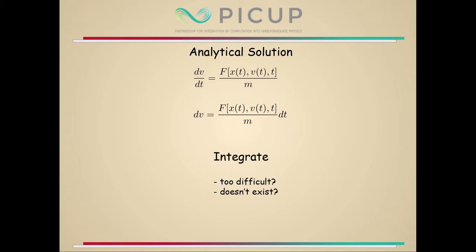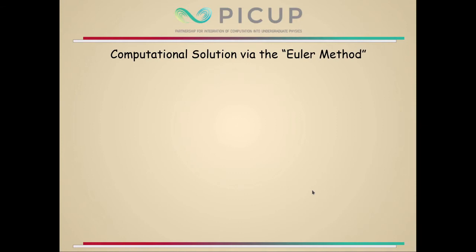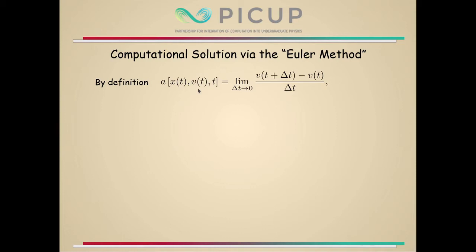So if the analytical solution fails for whatever reason — too hard or simply doesn't exist — then we really have no choice but to go to a computational solution, and what I'm going to demonstrate is called the Euler method. By definition, A is the acceleration. I'm using this rather bulky notation, but it will be useful in a moment. So let's think about the nature of the approximation needed to build what we call the Euler method.